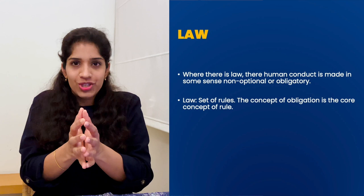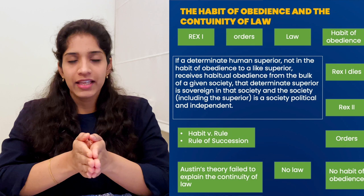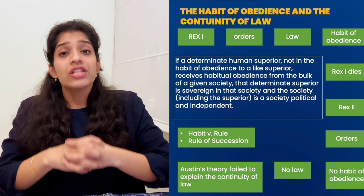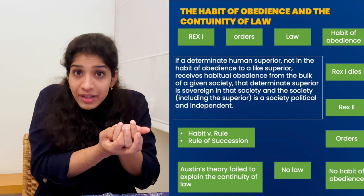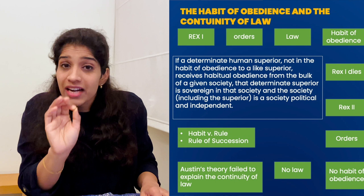अब third step में habit of obedience और continuity of law के बारे में बात करते हैं। Hart कहते हैं, Austin ने sovereign को define करते time habit of obedience का concept रखा। Austin define करते हैं कि जब एक human superior को पूरे society के members habitually obey करते हैं — उनको obey करना उनकी habit बन गई है — तब ये superior sovereign कहलाता है। Hart इसी बात को एक example के ज़रिए describe करते हैं।